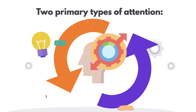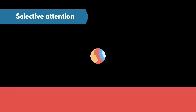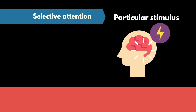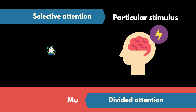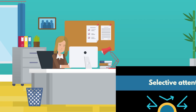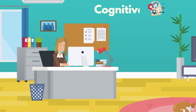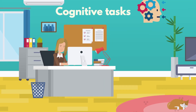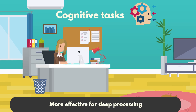There are two primary types of attention: selective attention, which focuses on a particular stimulus, and divided attention, which handles multiple stimuli at once. Both forms of attention are crucial in managing cognitive tasks, though selective attention is typically more effective for deep processing.